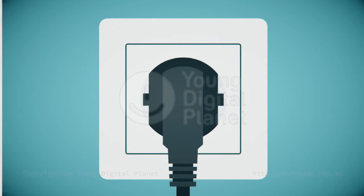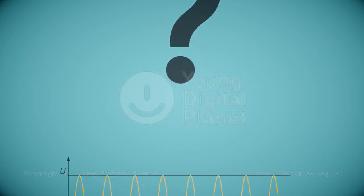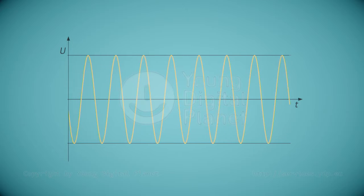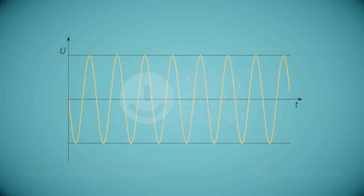When we put a plug in the socket, we often do not realize what has happened with the current from the network. As you know, the current in the main grid cannot be directly used to power electronic appliances. One of its properties is that the current is alternating.